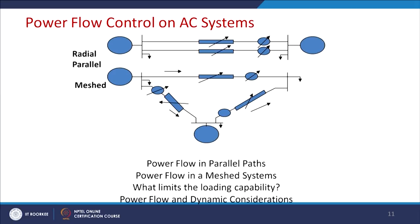Let us consider what we understand by FACTS devices in the context of radial parallel lines. Power can be sent from one point to another via two parallel lines, but whichever line has less impedance will carry more power. For example, if line A has impedance x and line B has impedance 2x, line A will carry 2P/3 and line B will carry P/3. If we can control the power flow through each line, we can change this distribution.